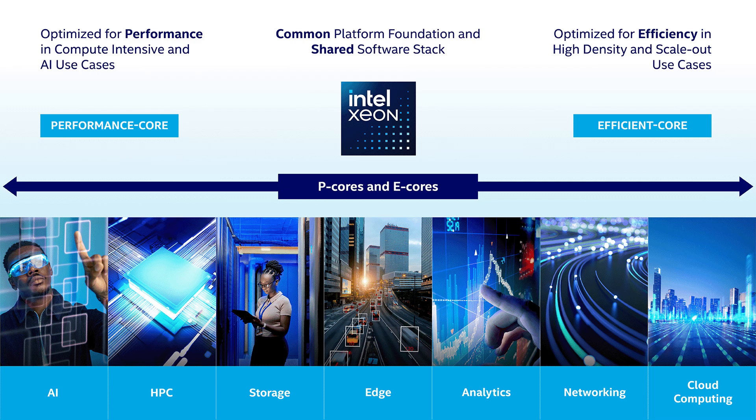In contrast, the Xeon 6 processors with E cores, known as Xeon 6700 or Sierra Forest, are more efficient, making them ideal for situations where power, density or cooling is limited.